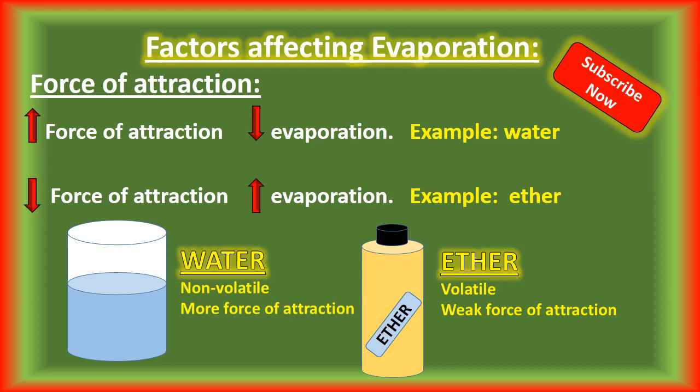Factors affecting evaporation. The first is the intermolecular force of attraction. To understand its effect on evaporation, let's perform an experiment — pour some water in one plate and ether into another plate. After some time, you can observe that water evaporates to a very little extent whereas ether evaporates quickly. This is due to the strong force of attraction between water molecules, which holds them firmly, so fewer molecules can overcome the force of attraction and escape into the vapor state, whereas ether has a weaker force of attraction and more molecules can easily escape into the gaseous state.